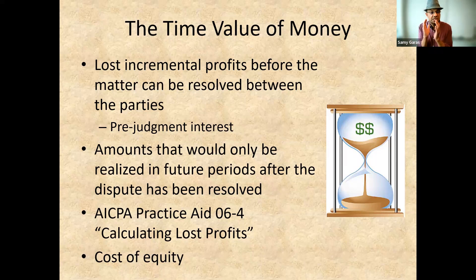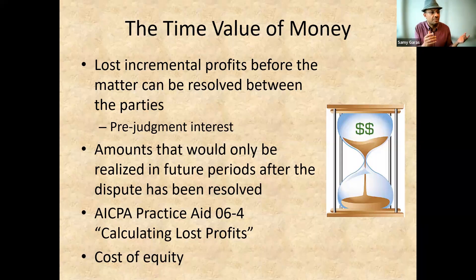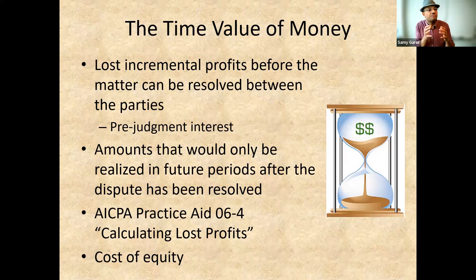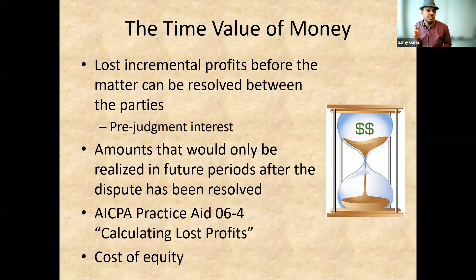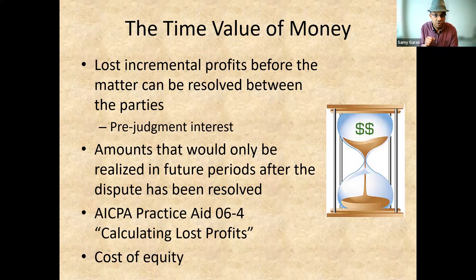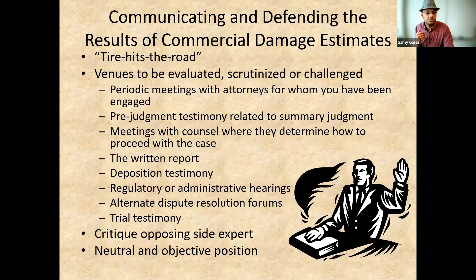To calculate the time value of money, the future value equals the present value of the money times one plus the interest rate to the power of the number of periods, which could be years. This gives me the future value of my present money. We use this not only to calculate the loss for this year but for future impacts as well. For example, if a fraudulent case this year will have an impact over the coming five years, I have to calculate my loss over those five years keeping in mind the time value of money, then present all of this to the judge.